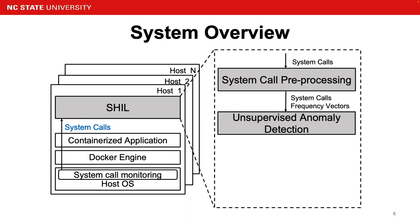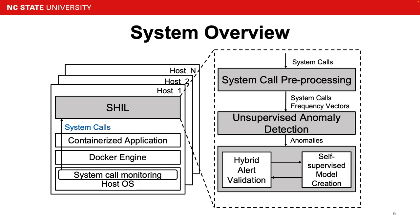The unsupervised anomaly detection component detects anomalies in the system call frequency vectors using an autoencoder. After capturing those anomalies, we have the last module. The hybrid alert validation component checks whether a detected anomaly is a boundary case, and invokes the supervised model to perform cross-validation if it is indeed a boundary case. Upon an attack alert, SHAO creates a supervised model such as a random forest using a window of recent system call frequency vectors before and after the attack is detected. Finally, the security attack alert is sent back to the container.